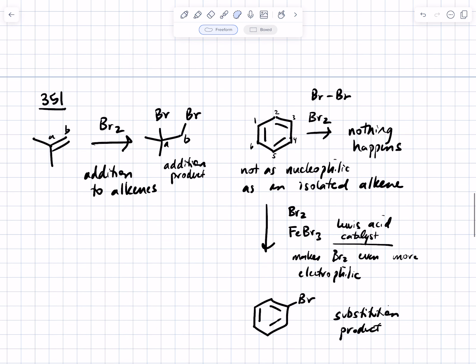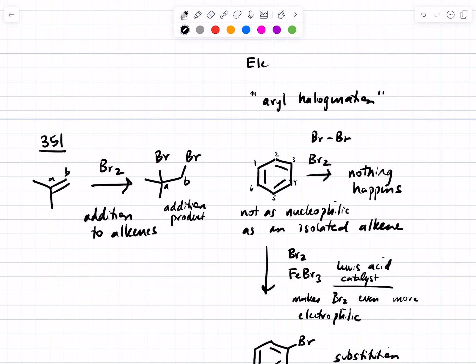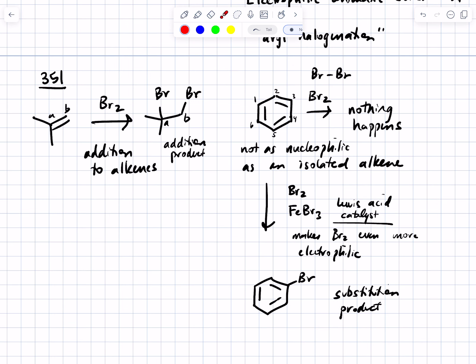This reaction is called aryl halogenation, and it is an example of a larger class of reactions called electrophilic aromatic substitution. Why do we call it a substitution reaction? Look at what's missing — our formula used to be C6H6, now it's C6H5Br. We swapped out a hydrogen for a bromine. The bromine replaced the hydrogen. A base removed the hydrogen — not even a very strong base.